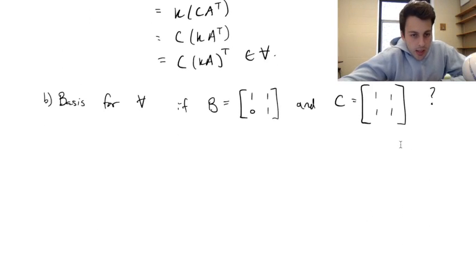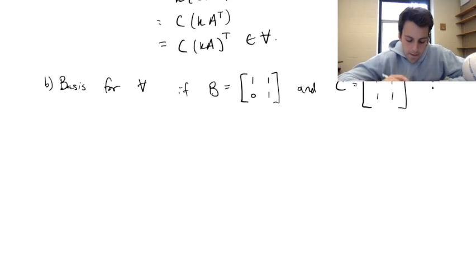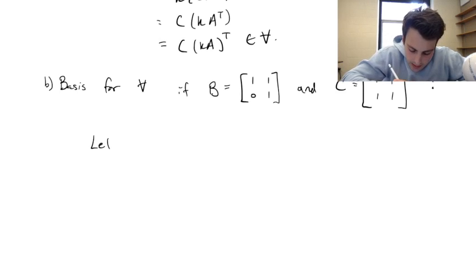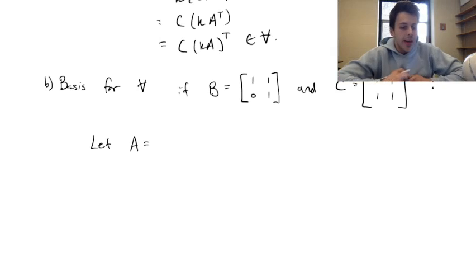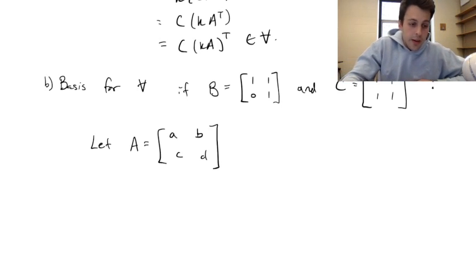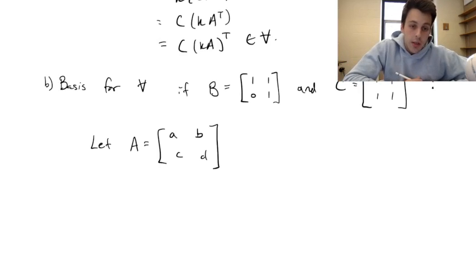Now we're asked to find a basis for the subspace given specific matrices B and C. Let A be a general 2×2 matrix with entries a, b, c, d — our goal is to generalize and break this into a linear combination of matrices that span the entire vector space V.